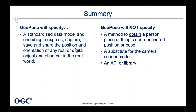What we're interested in with this geopose standard is a data model to encode and represent the location and orientation, to allow it to be shared between systems. What we're not interested in is how we obtain these positions and orientations — it's not a substitute for a camera sensor model. And we're not defining the means of access to the pose either, so it's not an API or a library. It is a data model.